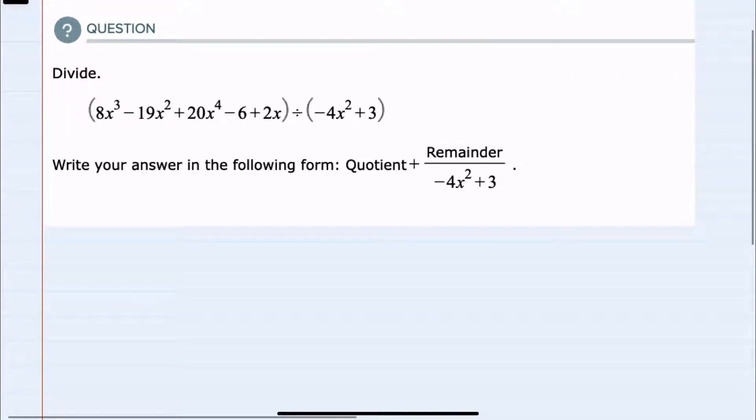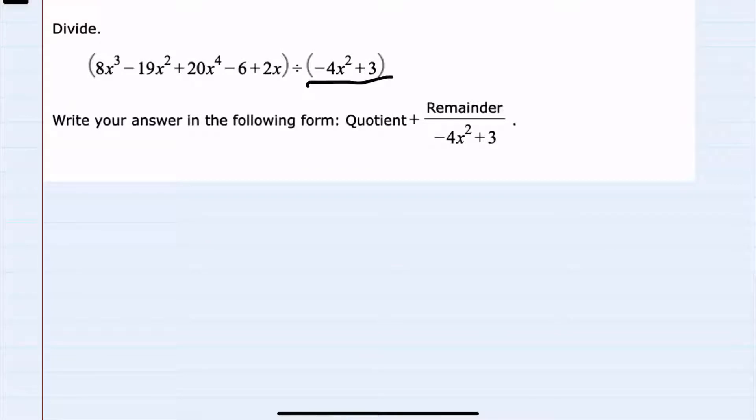So to set up long division, I would start with my divisor outside of the radical, but I do want to notice that while it is in descending order, I have a missing term. The highest degree here is 2, and I don't have an x to the 1.